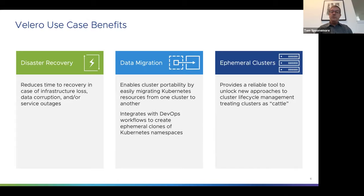Things are definitely more complicated in a Kubernetes environment than in a traditional IT environment when it comes to data protection. The first step to developing a data protection strategy is thinking about where the state lives within a Kubernetes system. The first place most folks think about is that etcd database — the backing store for the Kubernetes API where all deployments, config maps, secrets, and pods are defined. This is a dynamic store that changes as users deploy applications.